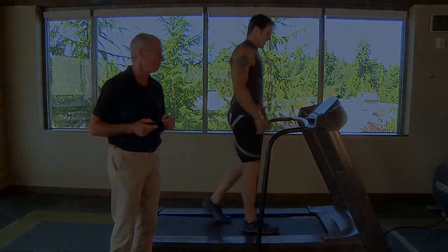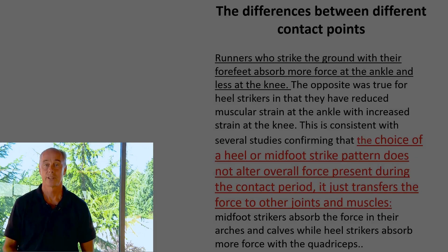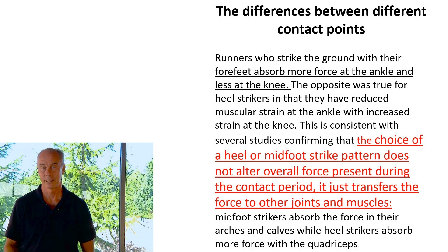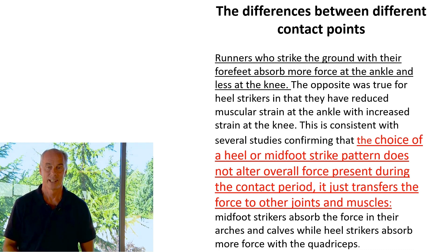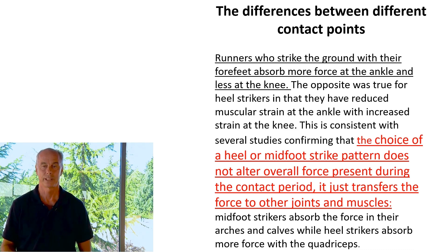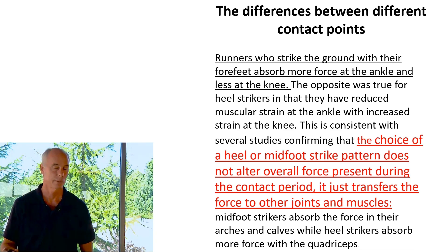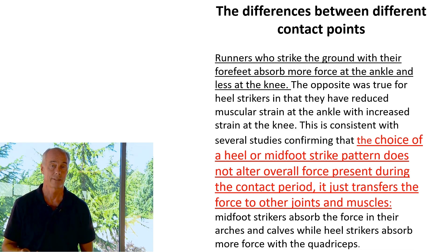So let's slow that down and summarize. Runners who strike the ground with their forefeet absorb more force at the ankle and less at the knee; the opposite is true of heel strikers. The choice of midfoot or rearfoot doesn't alter the overall force present during contact — it just transfers force to other joints and muscles. People who land on their midfoot absorb force in their gastrocnemius with a significant reduction in retropatellar pressure, while heel strikers absorb force with tibialis anterior but transfer more pressure into the back of the knee.